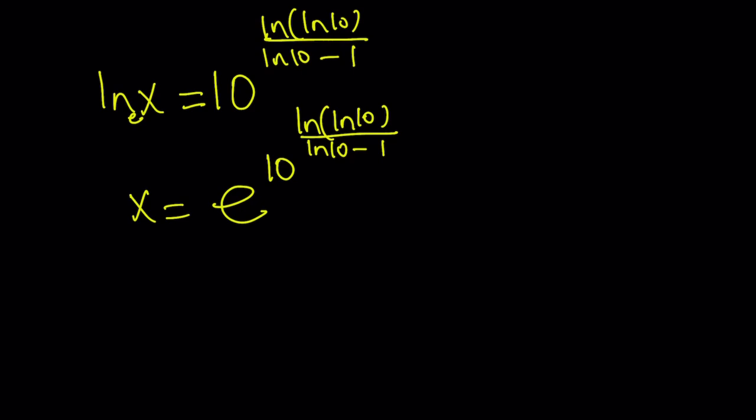You're going to evaluate what ln 10 is with a calculator or otherwise. And then you're going to take the ln again. So it's kind of like the ln of ln 10. And then subtract 1 from ln 10, divide those quantities, 10 to the power of that number. And then whatever that number is, e to the power of that number. So on and so forth. But you get the idea. This is going to be our solution.